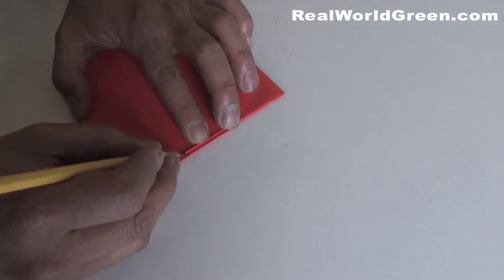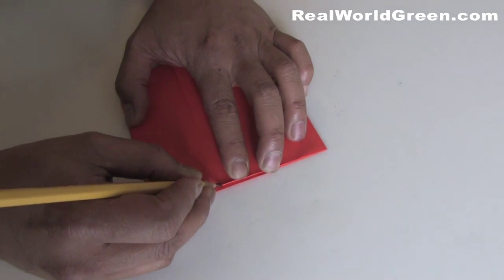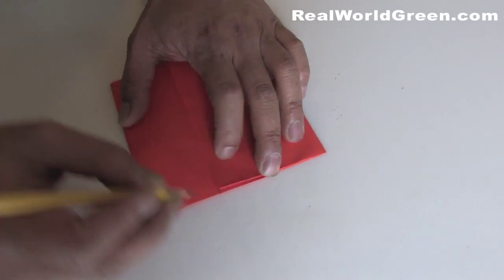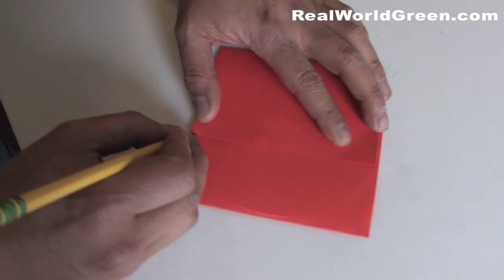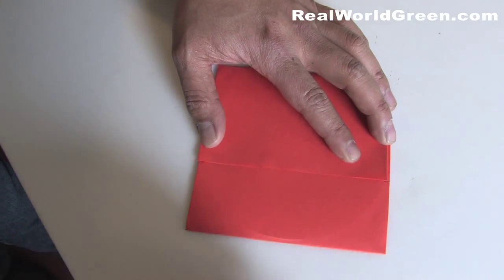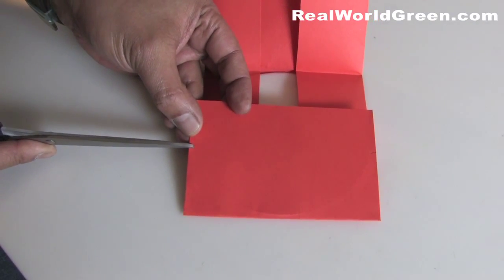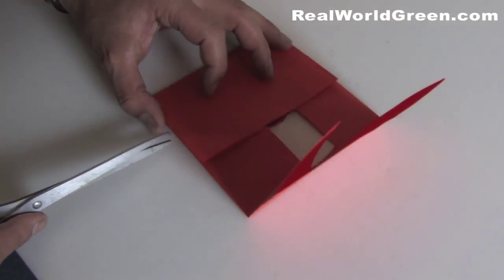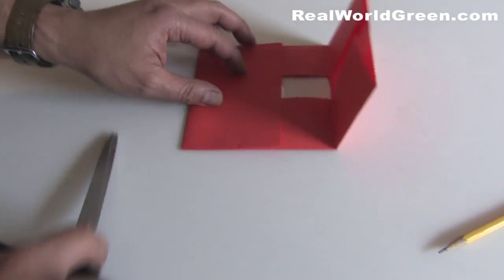So do that, just take a pencil. Mark off about a quarter, eighth of an inch. Same with the other side. Now with a pair of scissors, we're just going to make a little notch. On the other side, a notch.